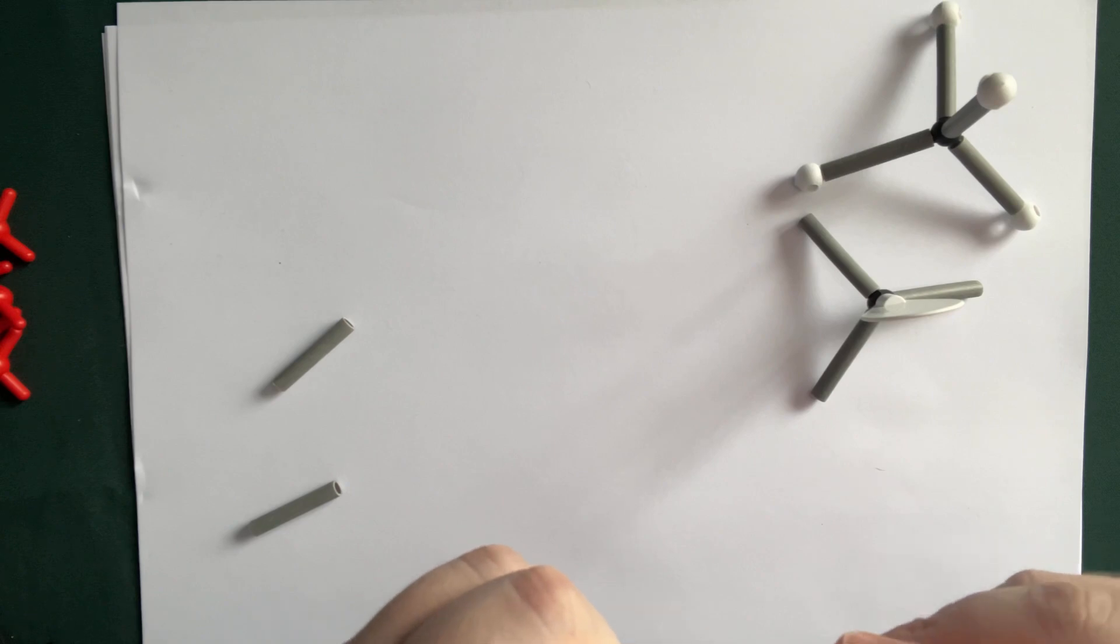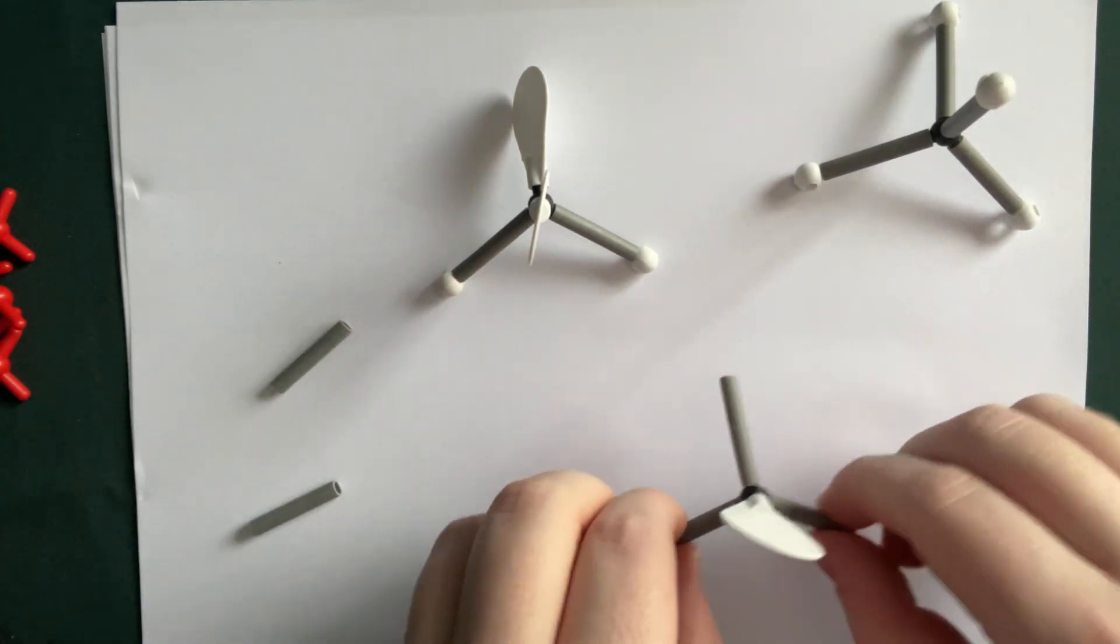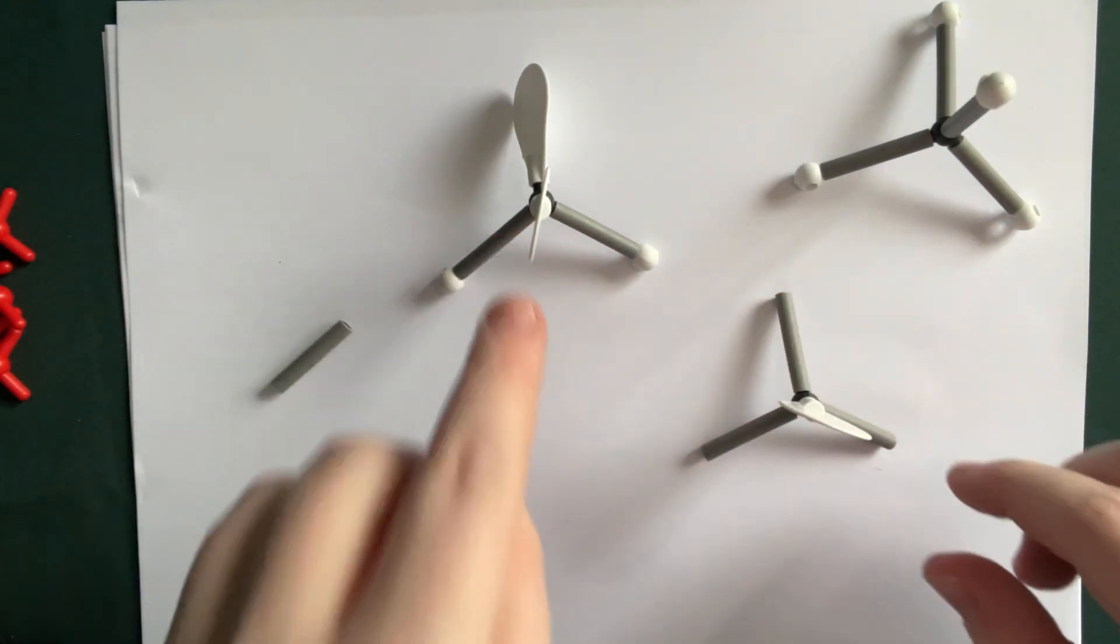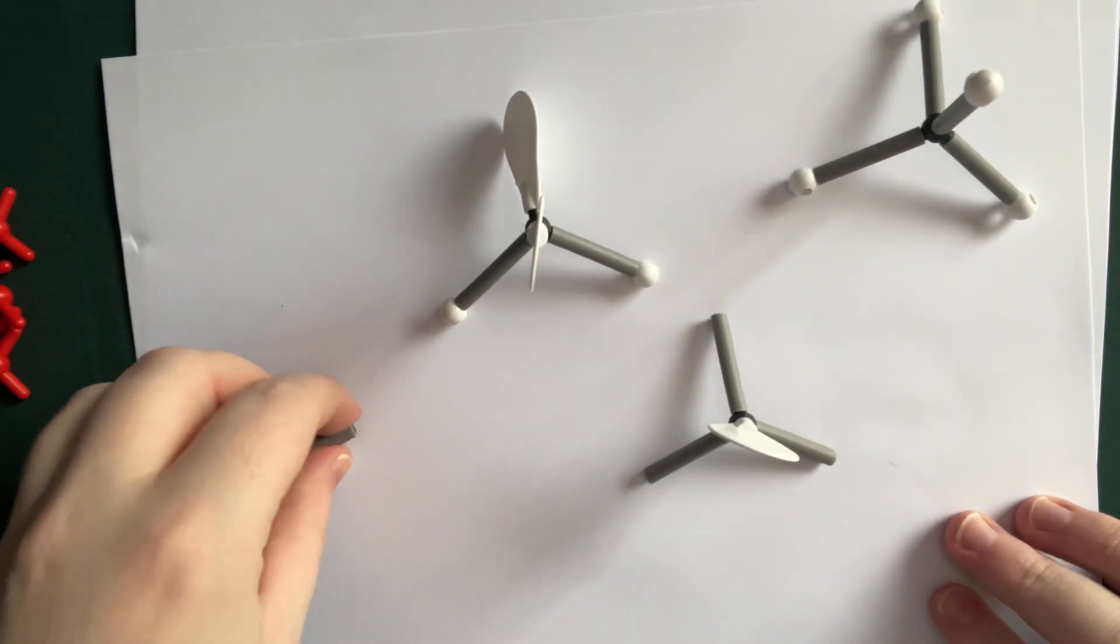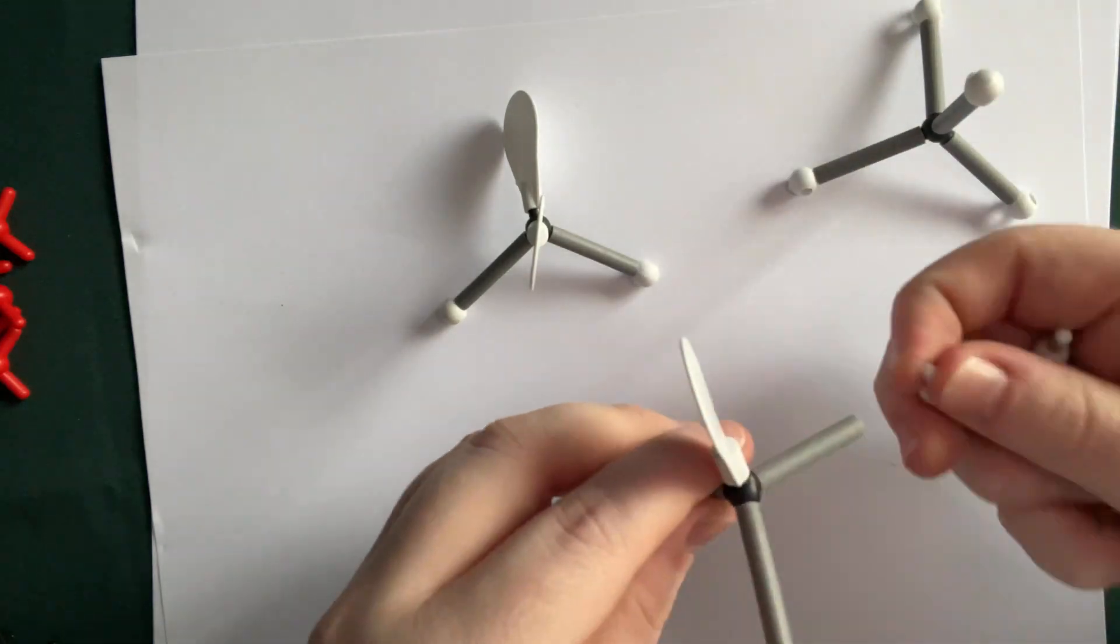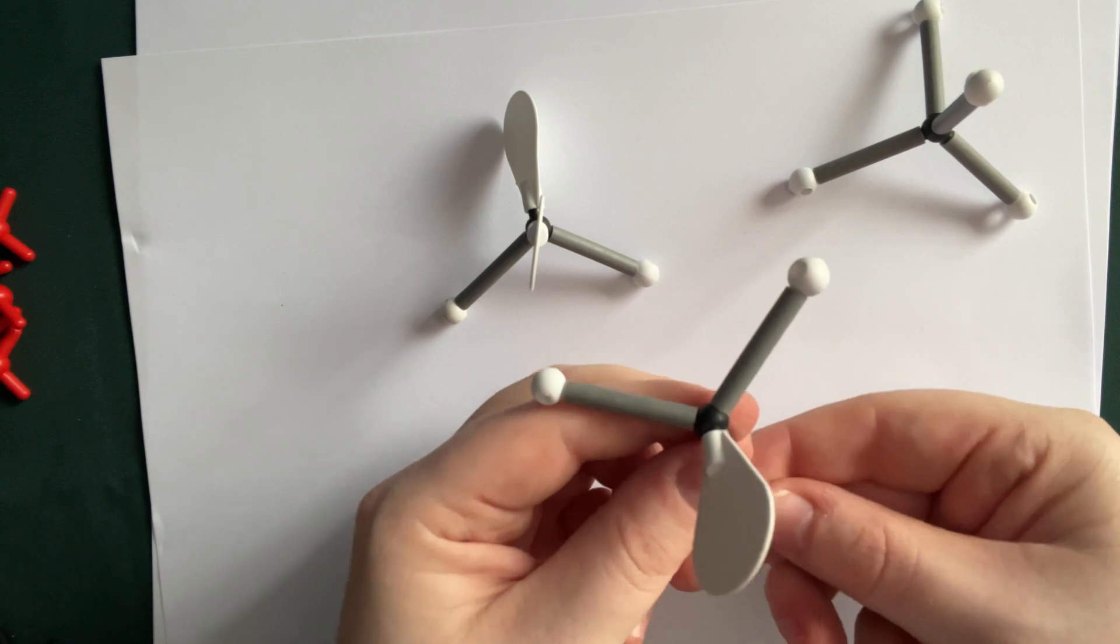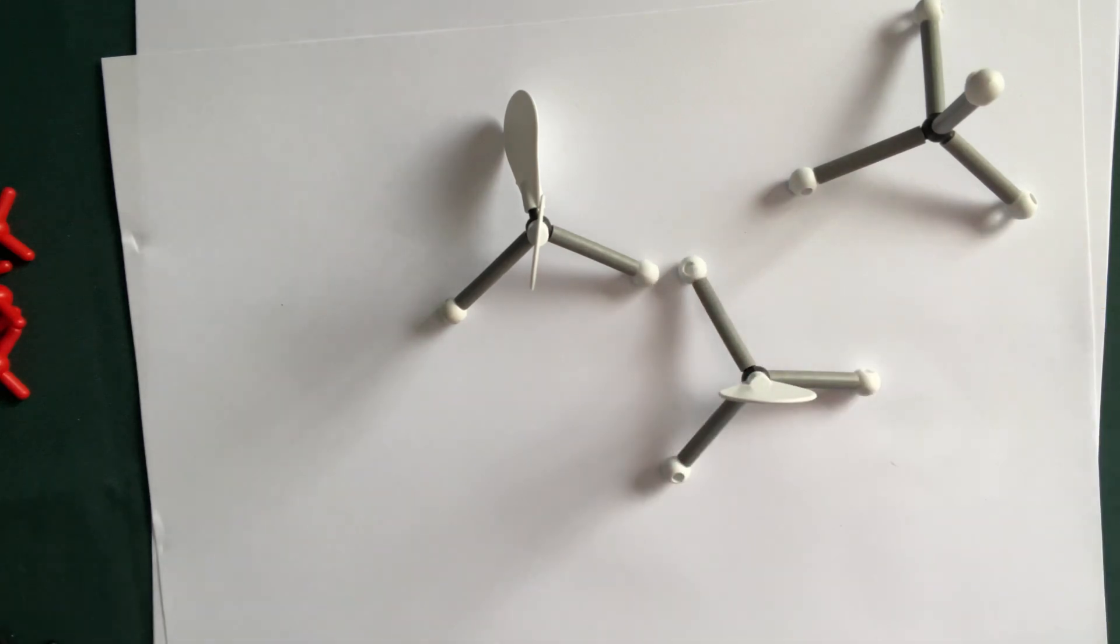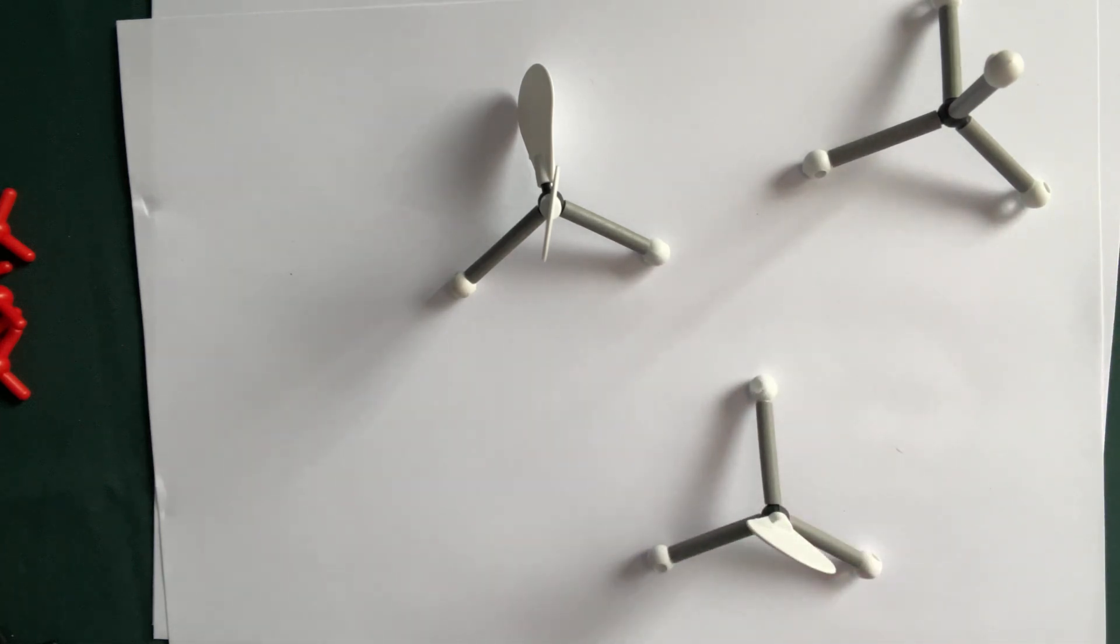All right, so those are your three structures for the tetrahedral electron pair geometry, with molecular geometries tetrahedral, trigonal pyramidal, and bent. Okay. So do you notice, hopefully you notice that. And if you still have enough of the terminal atoms, then you can fill all these bonds. All right. Cool. Thank you for watching. I hope you're enjoying the little videos. I enjoy making them. All right, I'll see you in the next one.